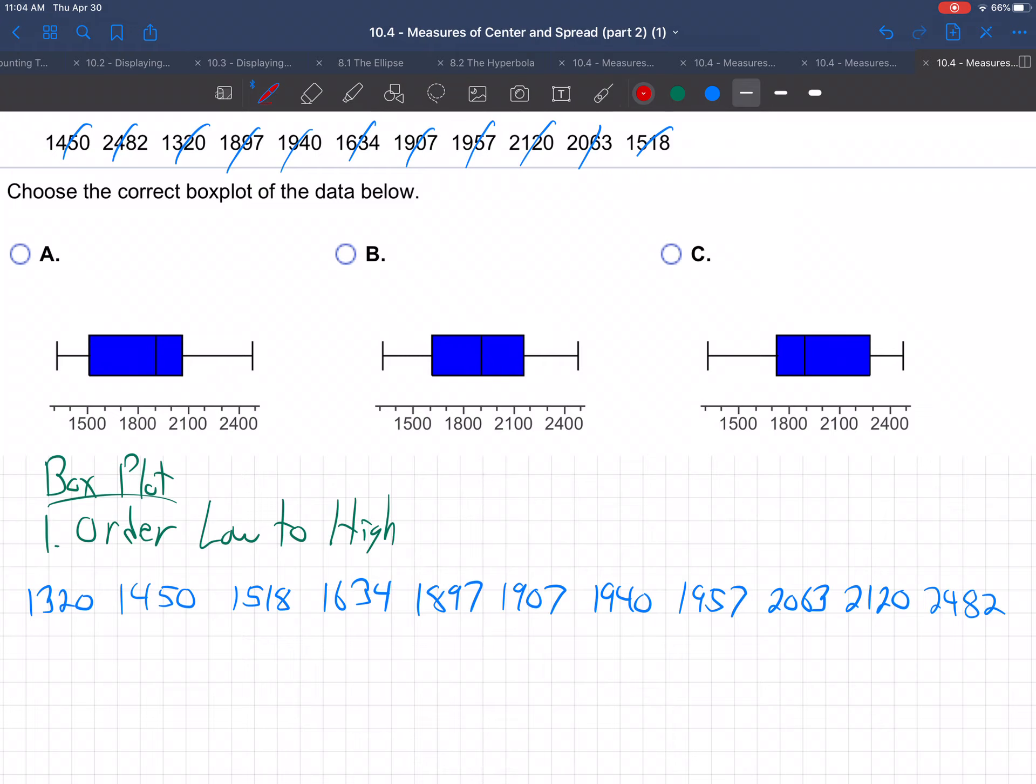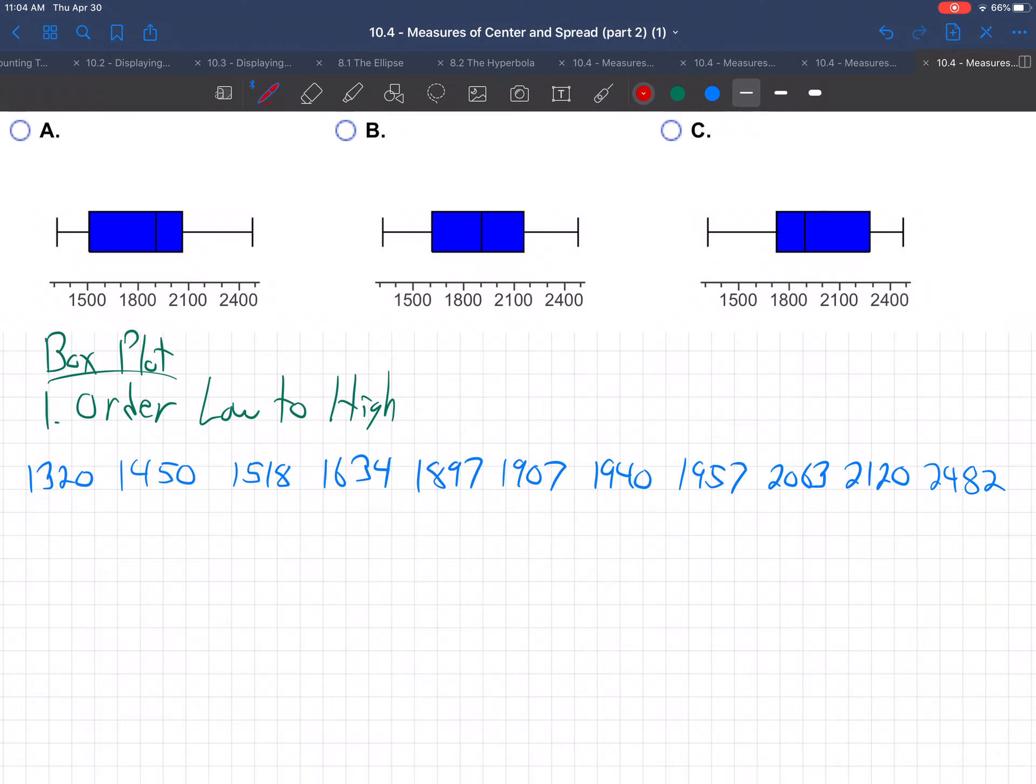Now, we've got to do a box plot. So how do you do a box plot? Basically, step two, you find the median. So to find the median, that's the middle, right? So if you have an odd number of values, you have one number in the middle. If you have an even number of values, you have two numbers in the middle, and you average them. So we have 11 numbers, which is odd. So divide by 2, and you get 5.5. So that means the sixth number is going to be our number.